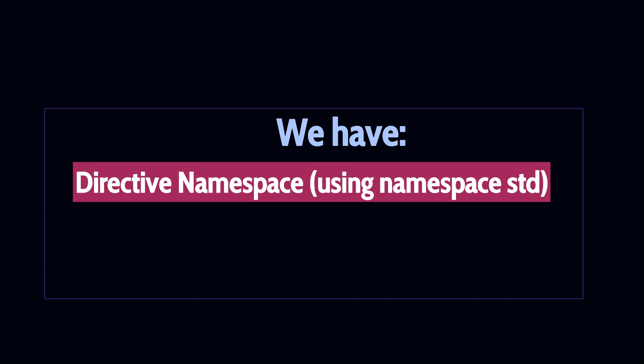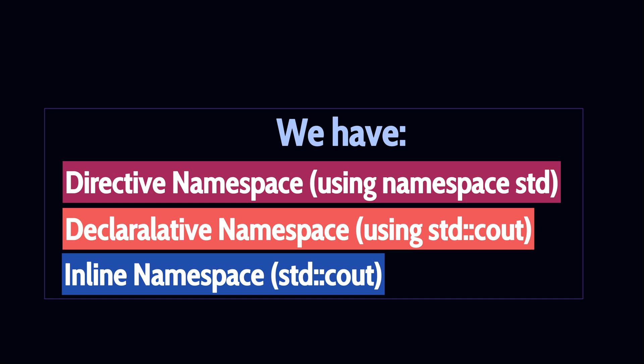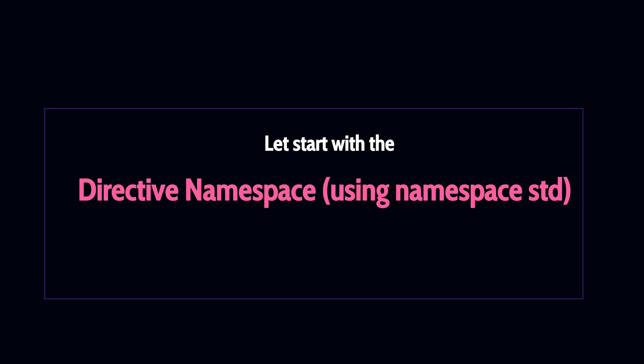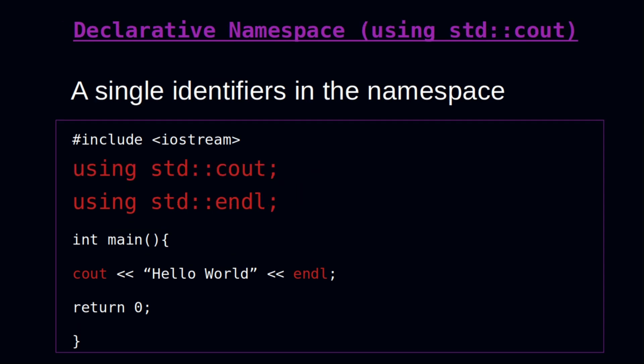There are three ways to use a namespace: the directive namespace, the declarative namespace, and the inline namespace. With the directive namespace, you find them alongside header files — 'using namespace std' is a directive namespace. When you add a namespace like this, everything inside that namespace — all the entities — is available to you for use in your projects.